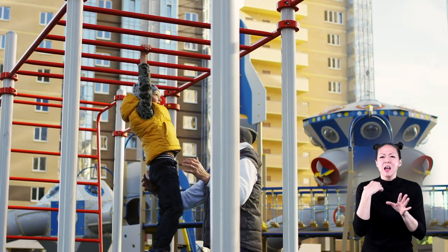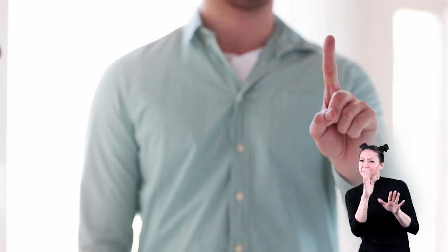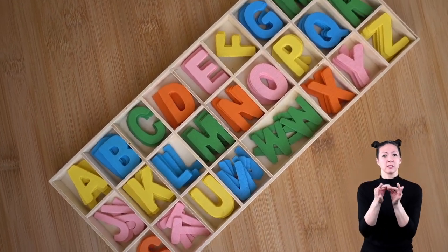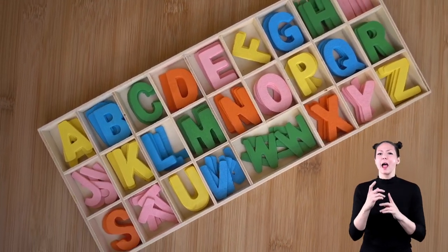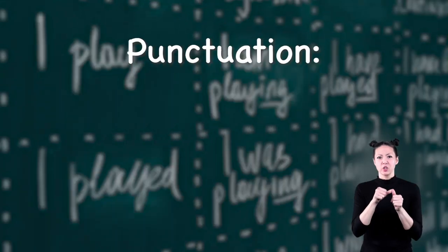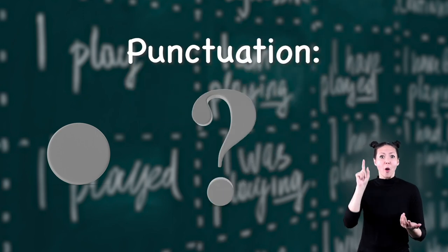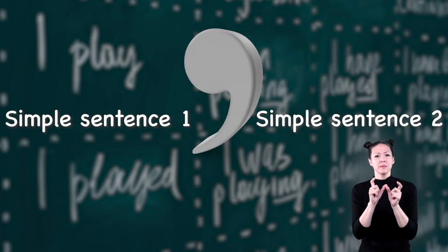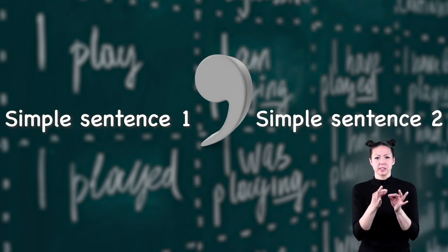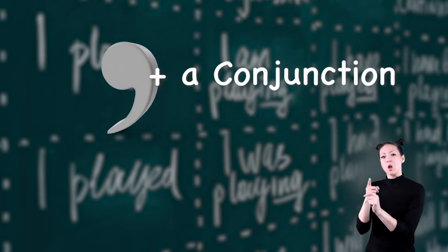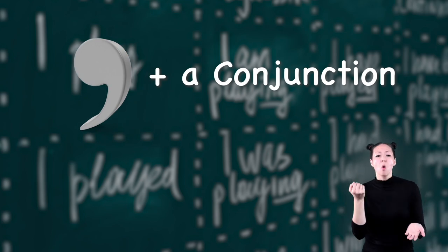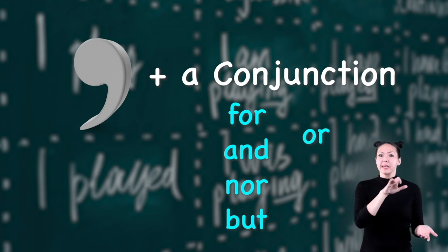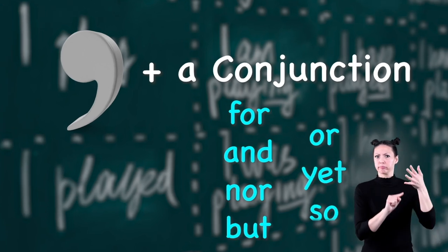Okay, there's one more thing. Whether you are writing simple or compound sentences, they must always begin with a capital letter and end with a punctuation mark, like a period, question mark, or exclamation point. And compound sentences have a comma in the middle separating the two simple sentences, followed by one of the conjunctions mentioned above — such as for, and, nor, but, or, yet, and so.